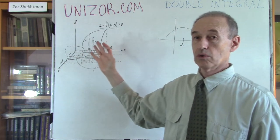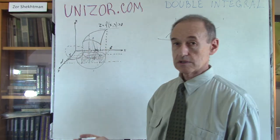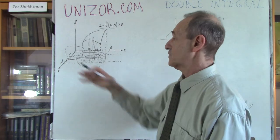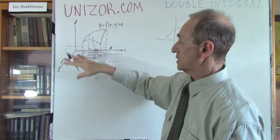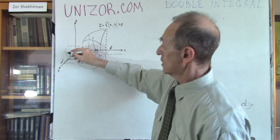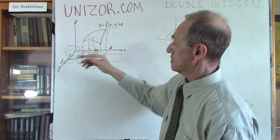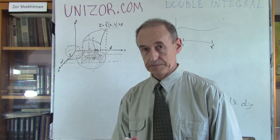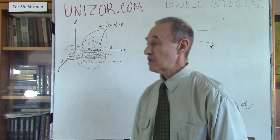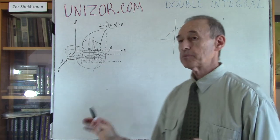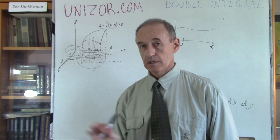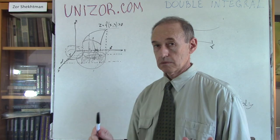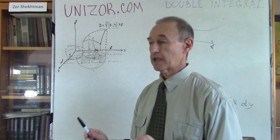Outside the circle, there are no values of the function. Let's consider half a sphere — the whole sphere has a top and a bottom, but half a sphere is a surface that can be represented as a formula. That would be a complication I will address in the next lecture, though it might really be only a slight complication.